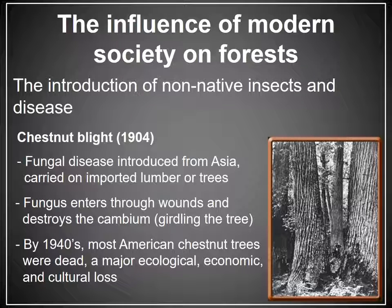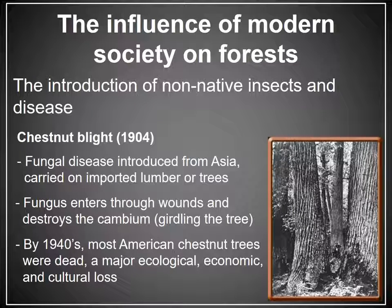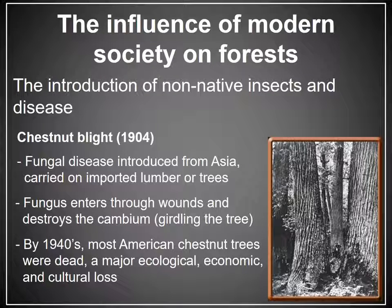The chestnut blight is a fungal disease that enters the tree through wounds and damages the vascular cambium, and has caused the loss of this species. The loss of this one species was really a major ecological and economic event with pretty substantial consequences. American chestnut is still found today in the woods, but it rarely exceeds 10 feet or so before it succumbs to the blight. Once killed, it typically re-sprouts from the stump, but it is certainly not what it once was as a component of our forest ecosystems here in the eastern U.S.